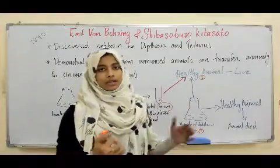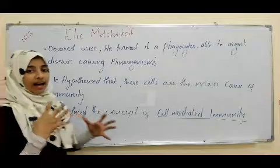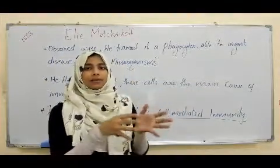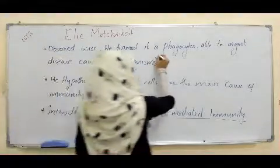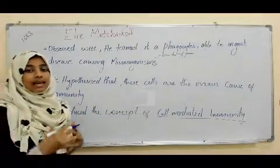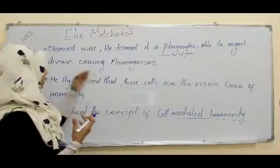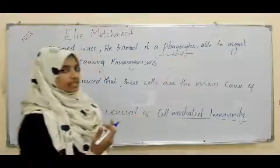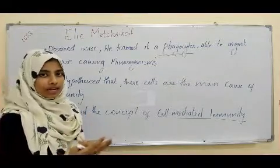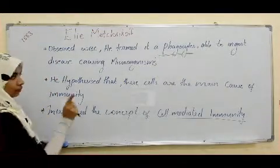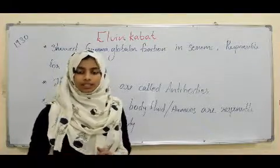This was called humoral immunity. Later, in 1883, Metchnikoff discovered some cells that have the capacity to ingest invading microorganisms or foreign bodies. He named those white blood cells phagocytes. He observed that they have the ability to engulf and digest microorganisms, and hypothesized that these cells are the main cause for immunity in living organisms — introducing the concept of cell-mediated immunity.